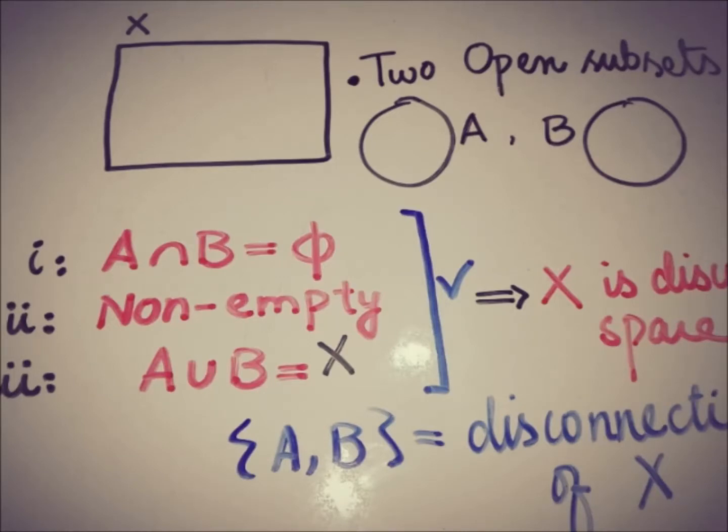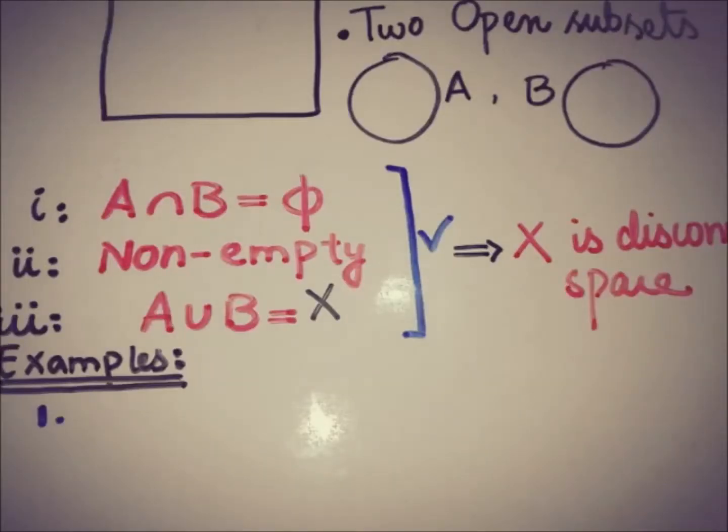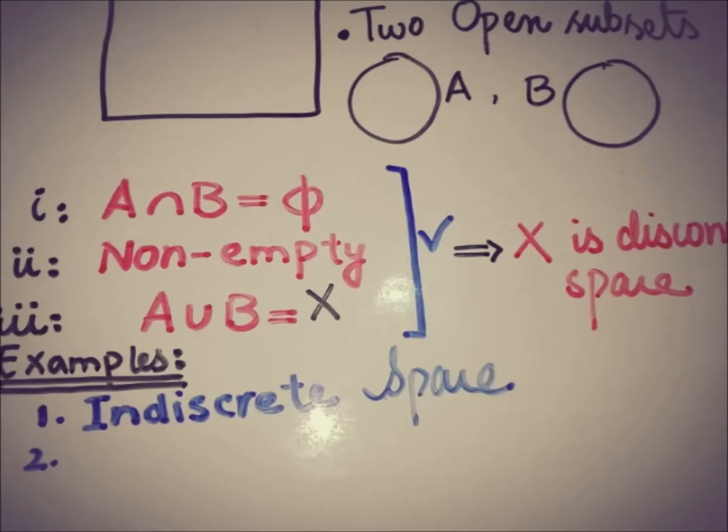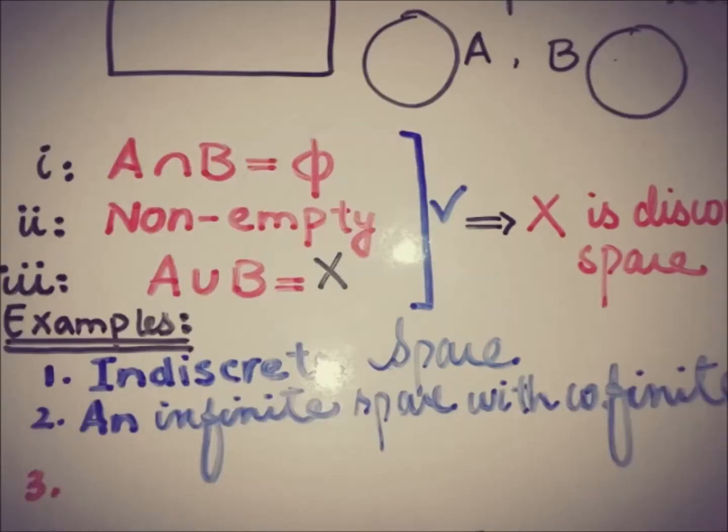So we are now moving towards the examples of connected and disconnected spaces. The first example of the connected space that is very common is indiscrete space. And the next example of the connected space is that of an infinite space with a co-finite topology.